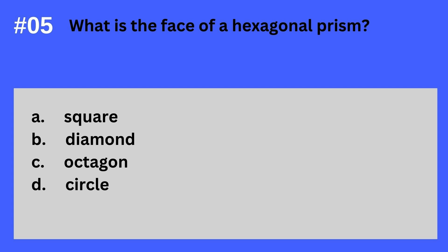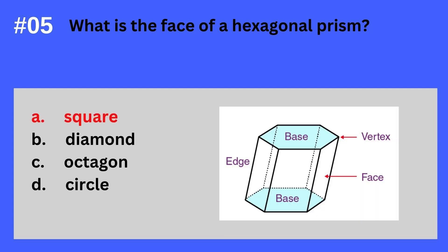Question 5. What is the face of a hexagonal prism? A. Square. B. Diamond. C. Octagon. D. Circle. The answer? It's A. Square. The face of a hexagonal prism is square.